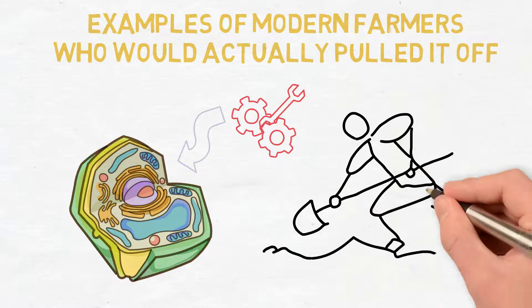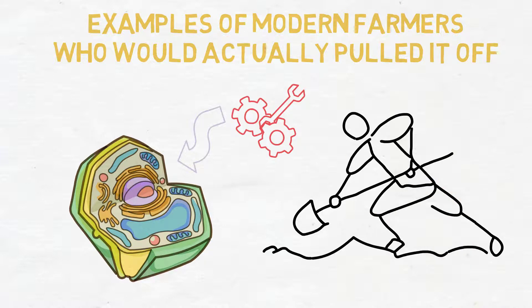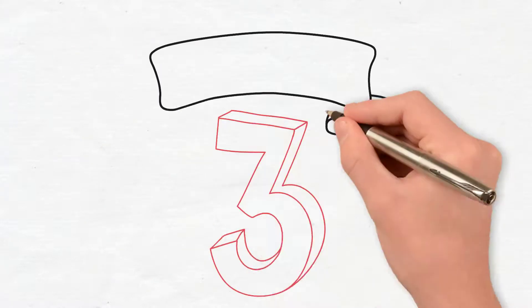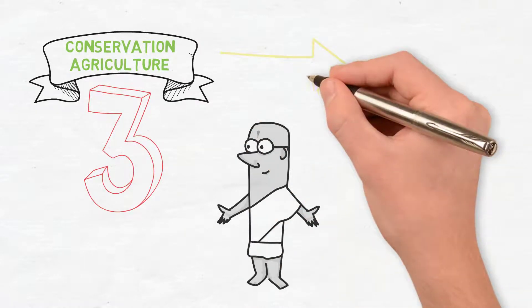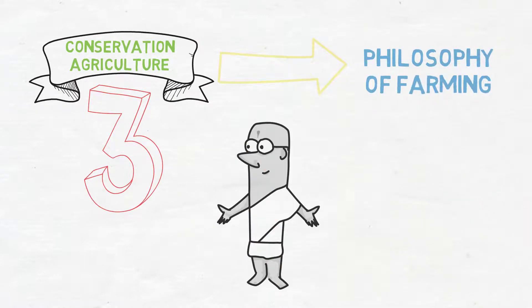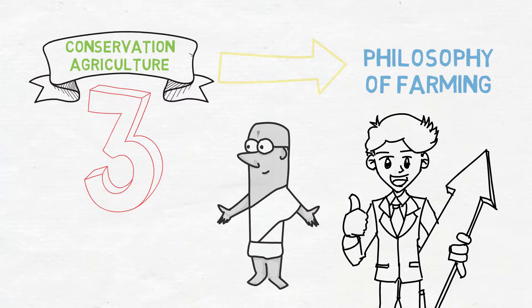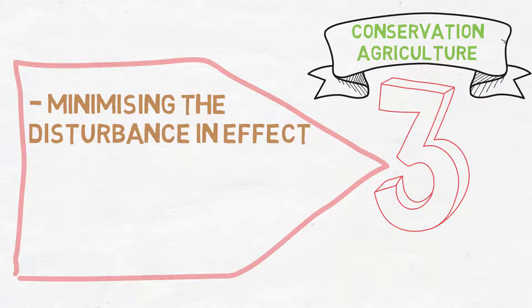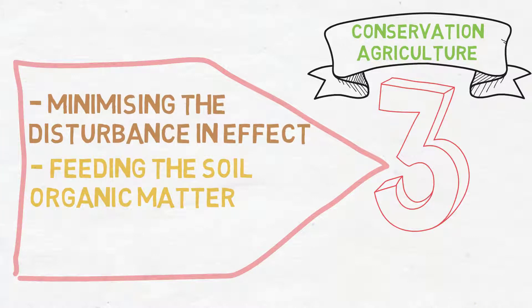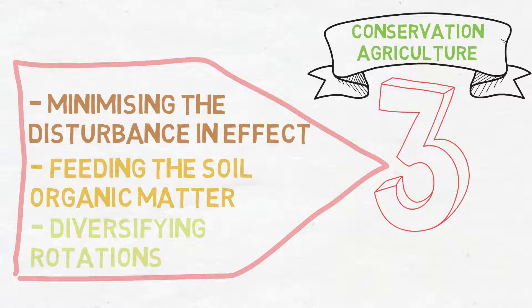And they did it through intensive farming. And you put those three things together under the label of conservation agriculture, and you've got a new sort of style and philosophy of farming that really seems to work to build soil fertility because it's those three things done together: minimizing the disturbance, in effect, feeding the soil organic matter through cover cropping and diversifying rotations, which helps with micronutrient provisioning and pest suppression.